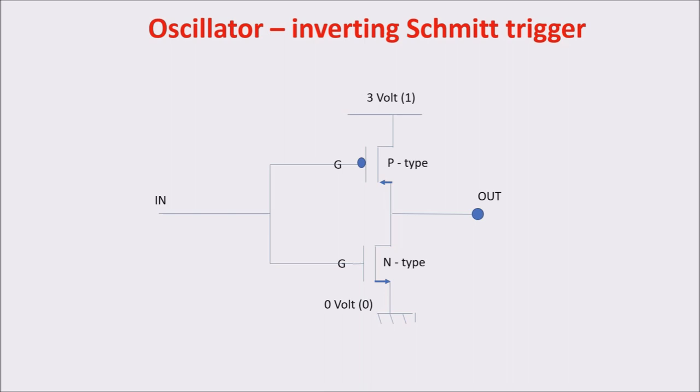As inverter, we use the CMOS inverter we saw in previous videos. We can see its simple working in this animation. When we apply a one, so a high voltage on the input, we turn on the N-type transistor because we apply on its gate a voltage higher than its threshold voltage. The N-type transistor in ON state connects the output with the ground, so the output goes to zero very quickly, realizing the inversion.